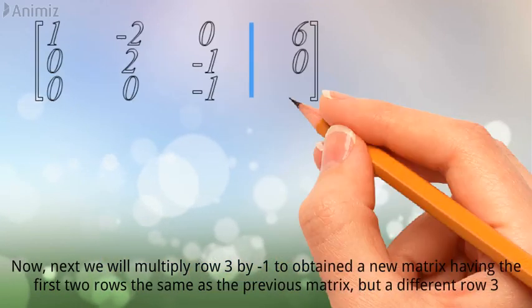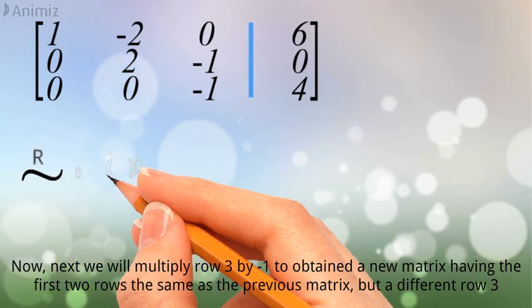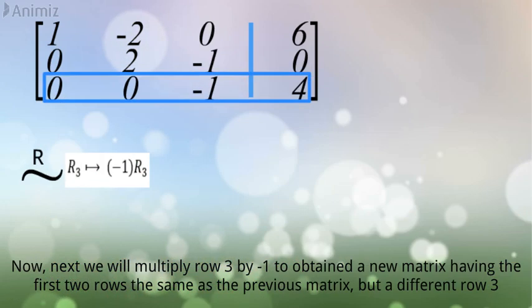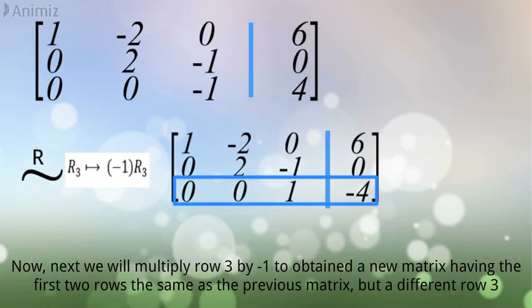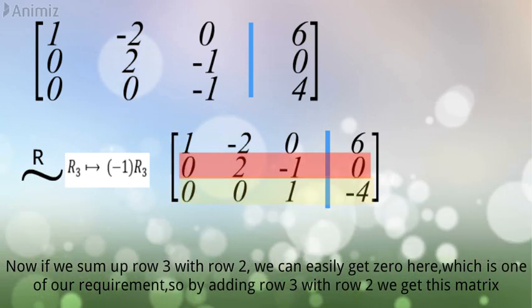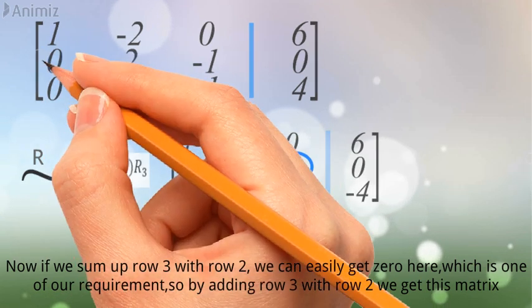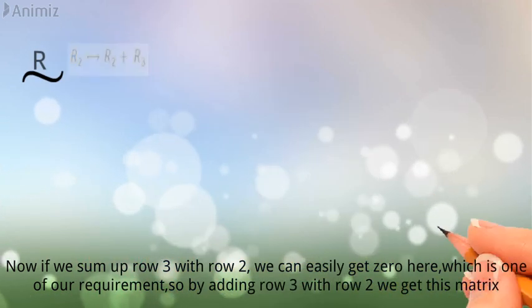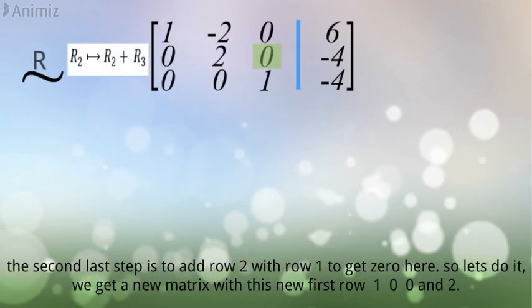Now, next we will multiply row 3 by minus 1 to obtain a new matrix, having the first two rows the same as the previous matrix, but a different row 3. Now if we sum up row 3 with row 2, we can easily get 0 here, which is one of our requirement. So by adding row 3 with row 2, we get this matrix.